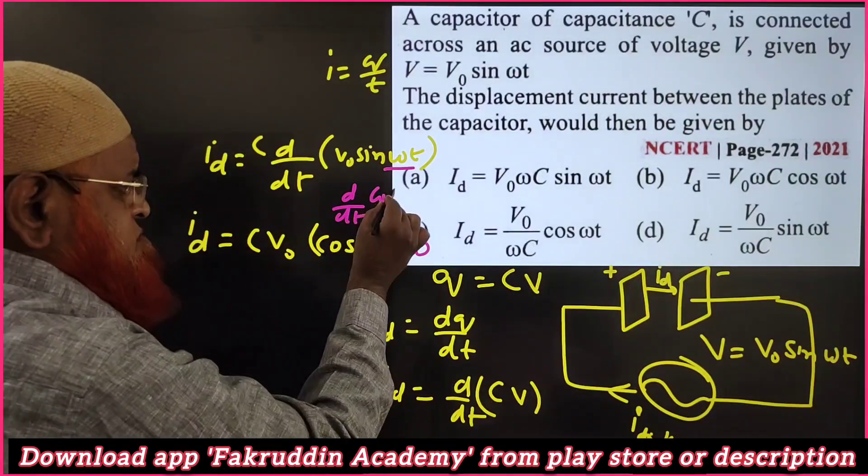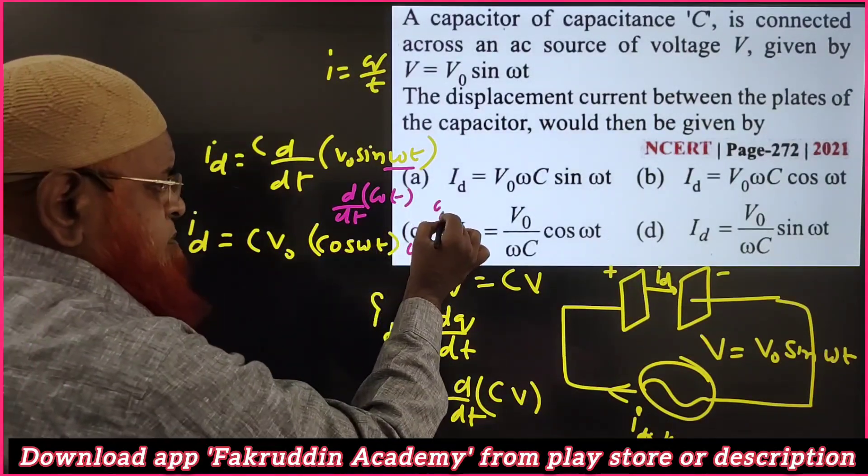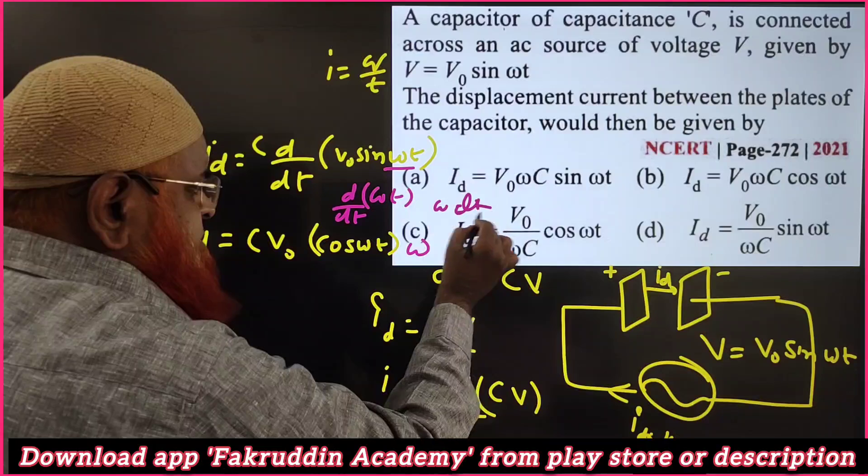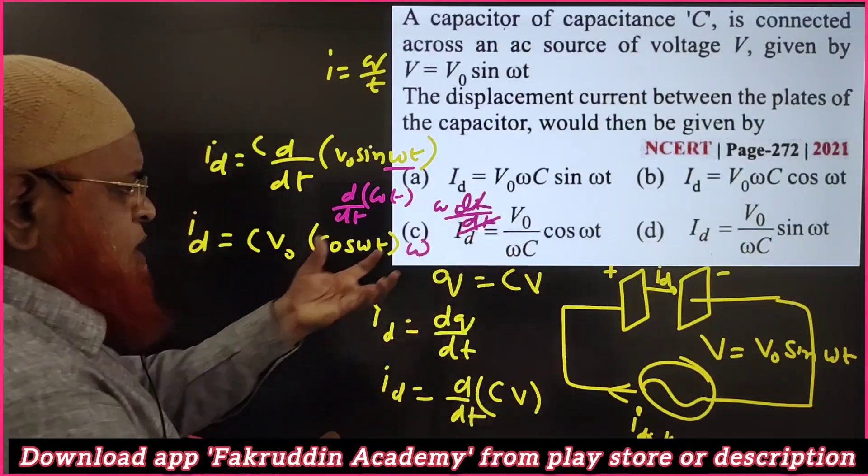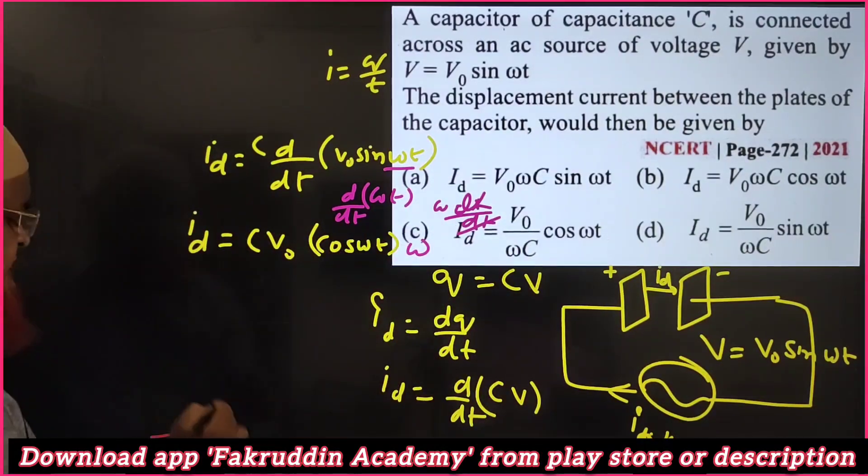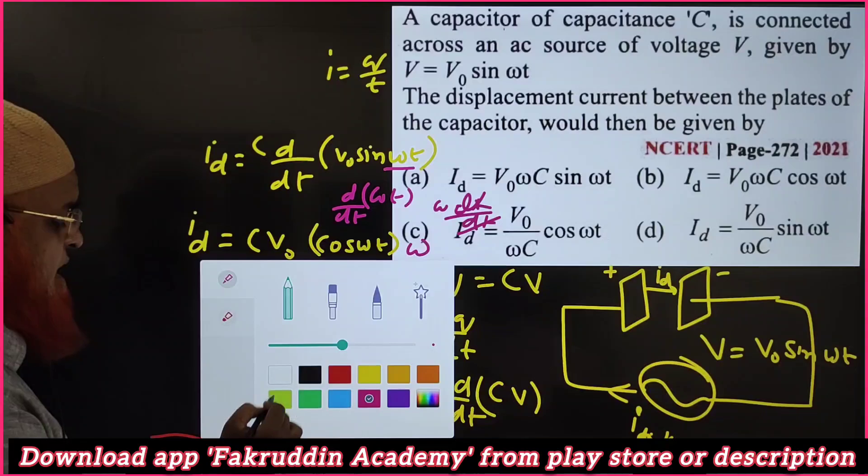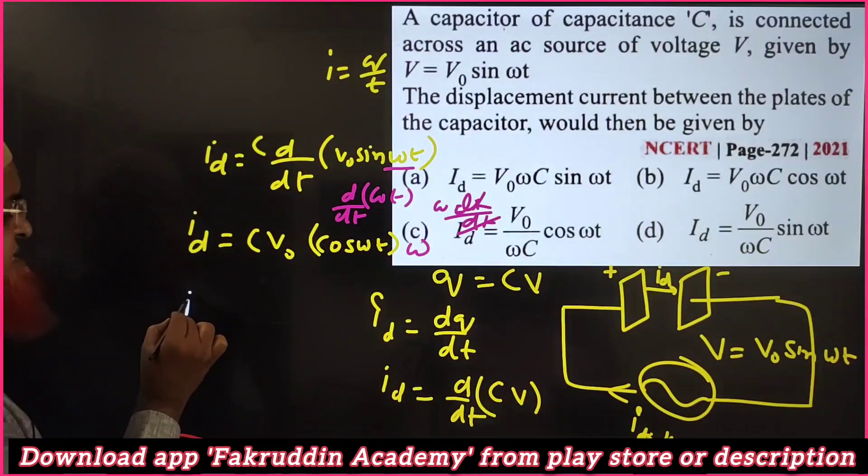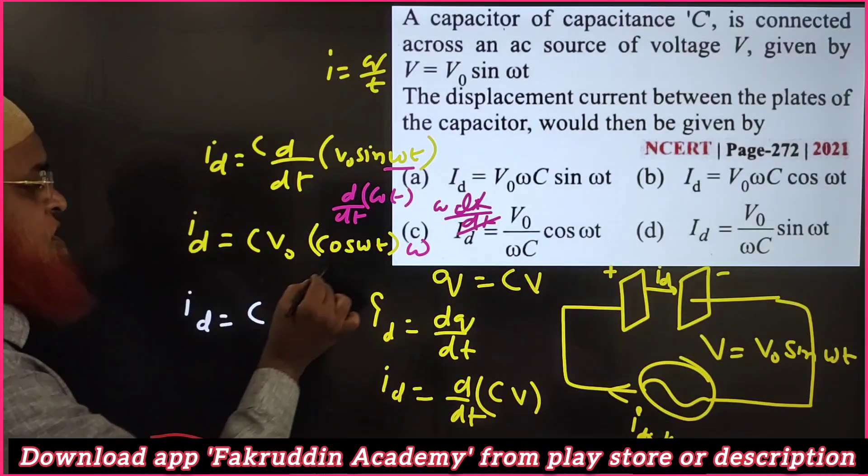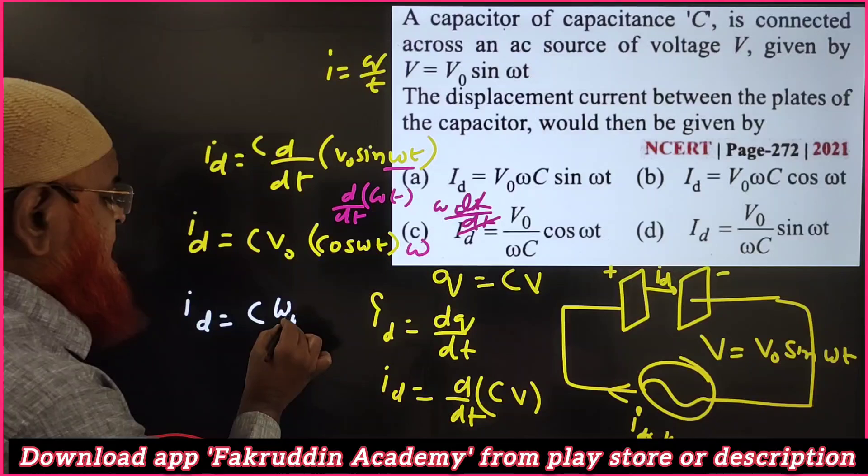ωt, d/dt of ωt is equal to ω. Then finally you will be getting one equation: drift current is equal to C ω V₀ cos ωt.